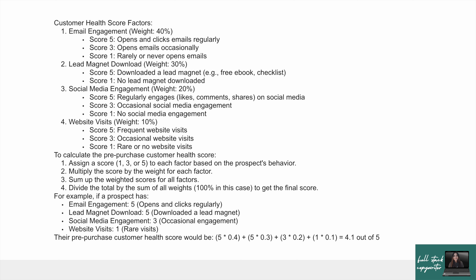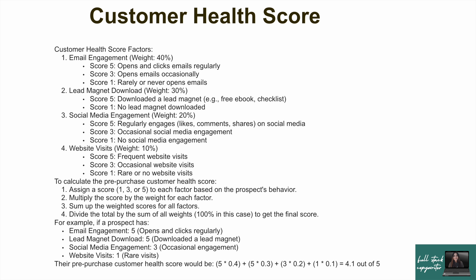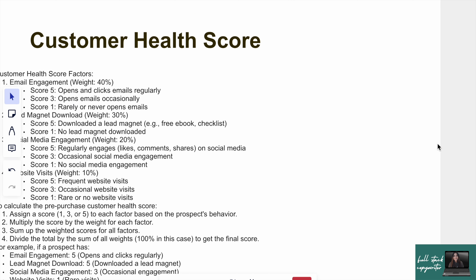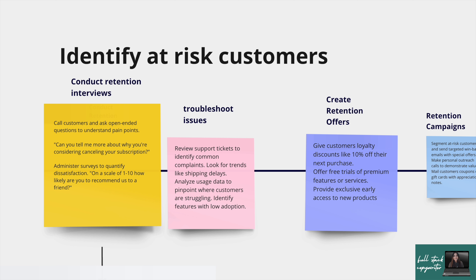I use Google Sheets because I like to keep things simple. I create columns for email, lead, social, and website, and add customers row by row with their names. I assign scores, calculate the final score at the end, and plan campaigns or strategies for the least engaged customers. Customer Health Score is the most important metric — that's why I spent so much time on it. If you have any doubts, please let me know in the comments and I'll respond.